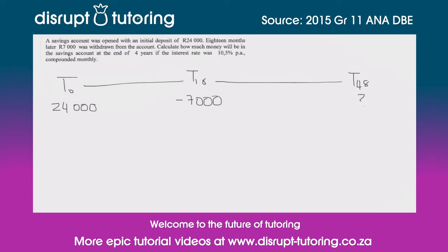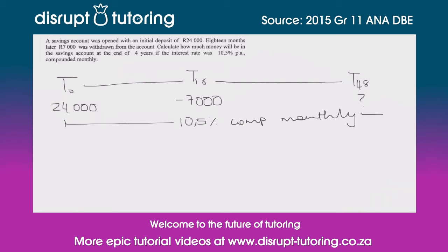Our interest rate for the entire period is 10.5 percent, compounded monthly — which is also really important. Now let's build an equation for this. We want to figure out what the final amount will be at the end of this period.